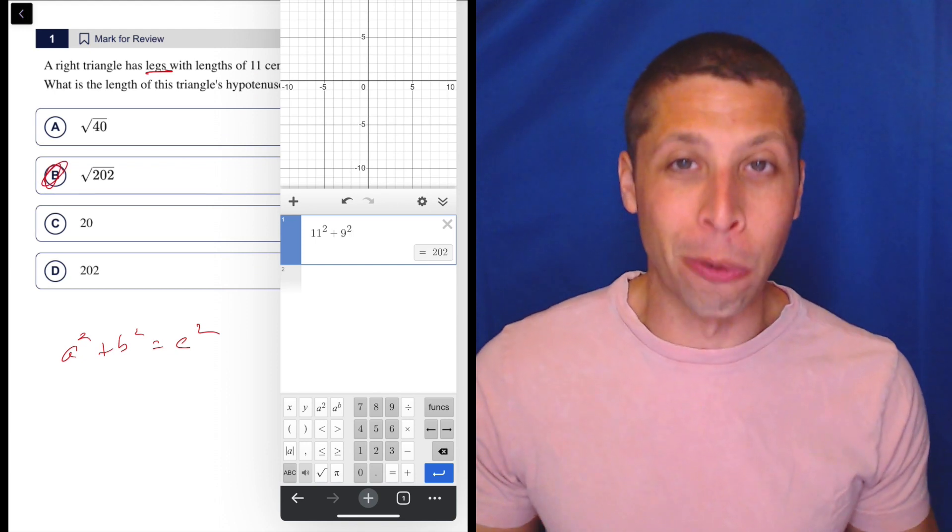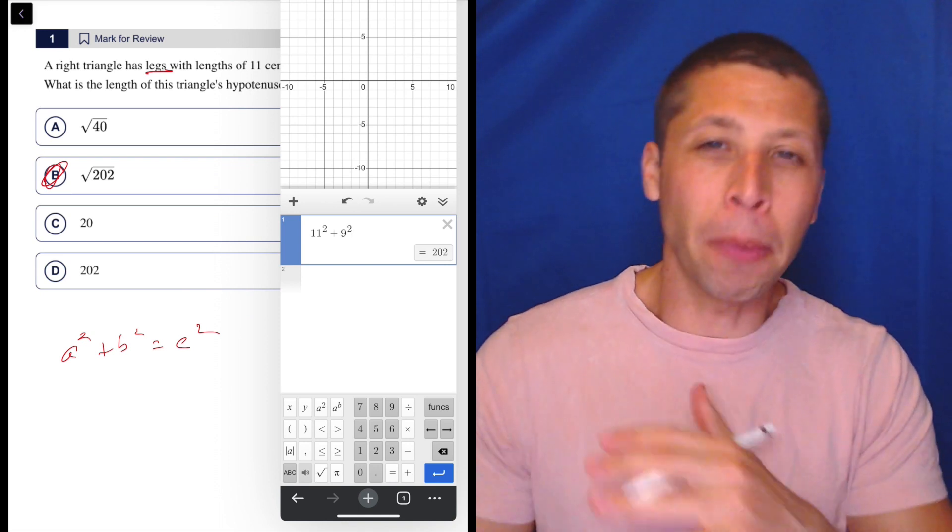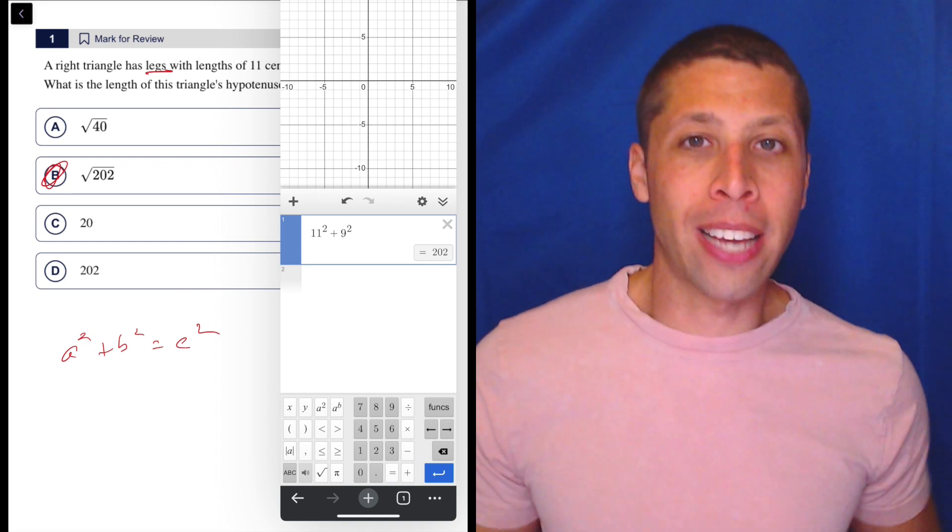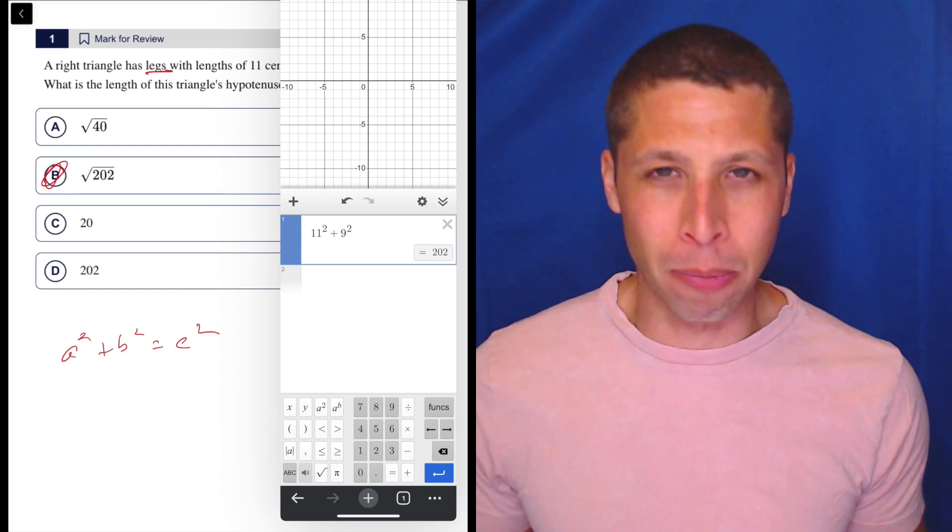You don't really have to do anything with it. 202 just becomes radical 202 when we take the square root, so even if they mean it's simplified or anything like that, just put it in the calculator. Put it in Desmos, let it turn that into a decimal, and then just compare decimals.